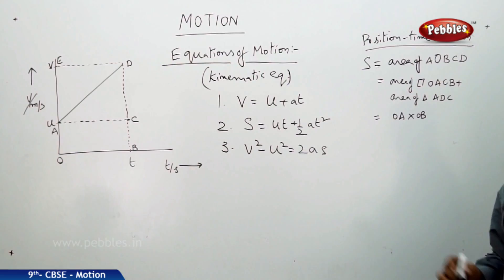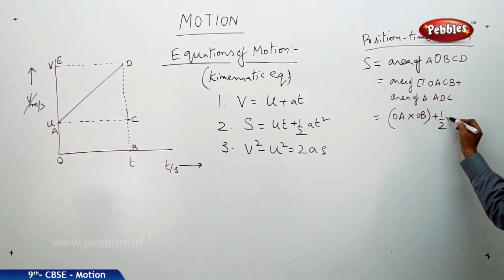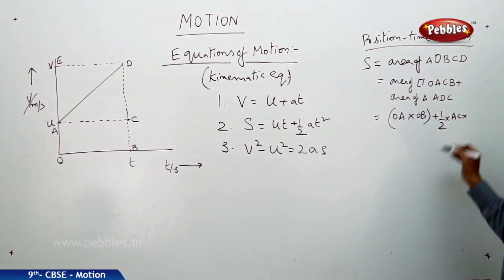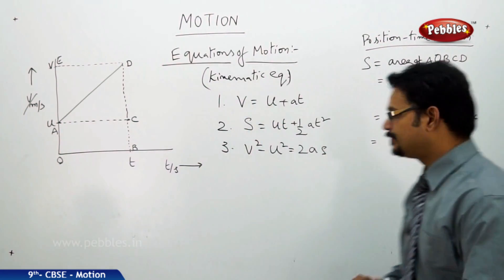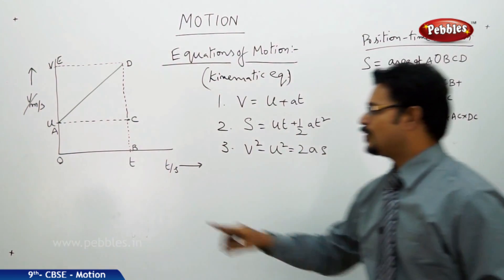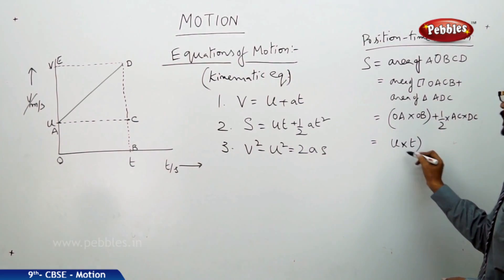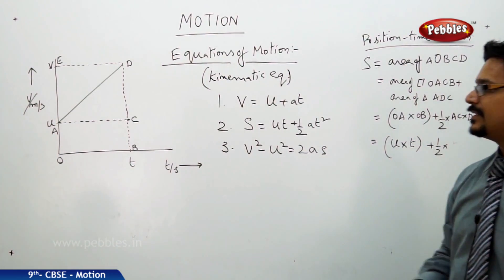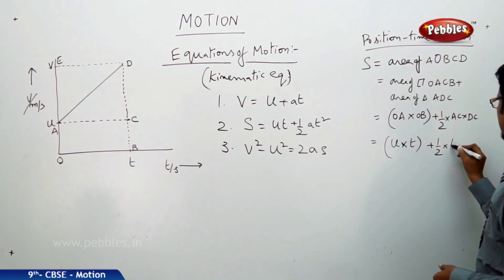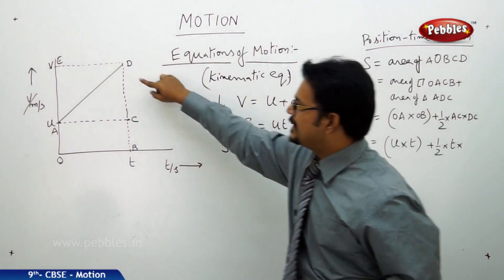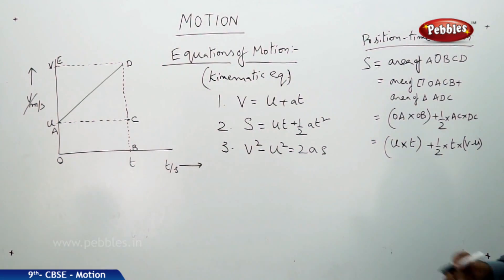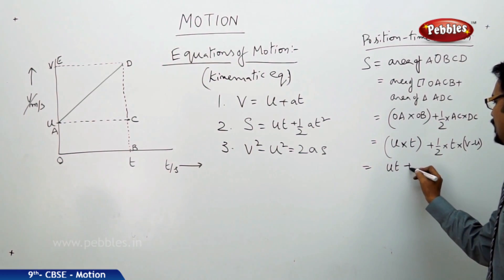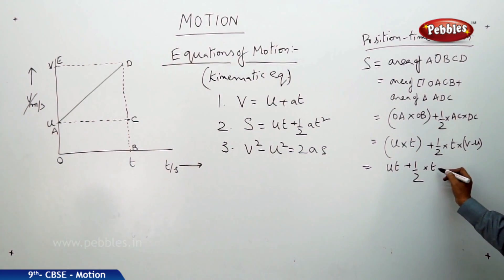Area of rectangle OACB = OA × OB (length × breadth). Area of triangle ADC = ½ × base × height, where the base is AC and height is DC. From the graph, OA = u and OB = t, so the rectangle area is u·t. For the triangle: AC = t and DC = v - u, so the triangle area is ½ × t × (v - u).